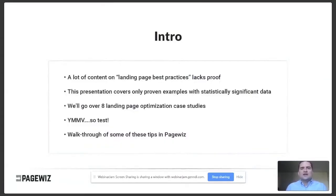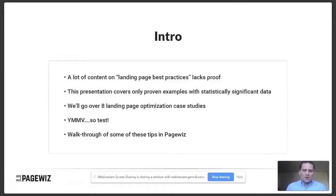We're going to go over eight case studies, all with statistically significant data — a 95% or above confidence rating, meaning there's very little likelihood that chance was involved in which variation won. These work for specific companies and specific situations, so not everything will work for you. I'd recommend testing anything that seems interesting rather than implementing all eight things today.